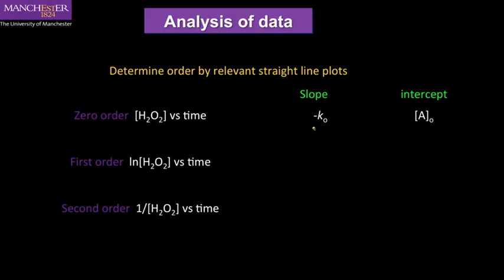If we do that, we will get a slope if it's a straight line and therefore an intercept as well. If it works out for zero order, the slope will be minus the zero order rate constant, and the intercept will be the initial concentration. The slope will be the same if it's first order, but if it's first order rate constant, the intercept will be logarithm of the initial concentration. And if it's a second order plot, the slope will be positive, the second order rate constant, and the intercept will be one over the initial concentration.